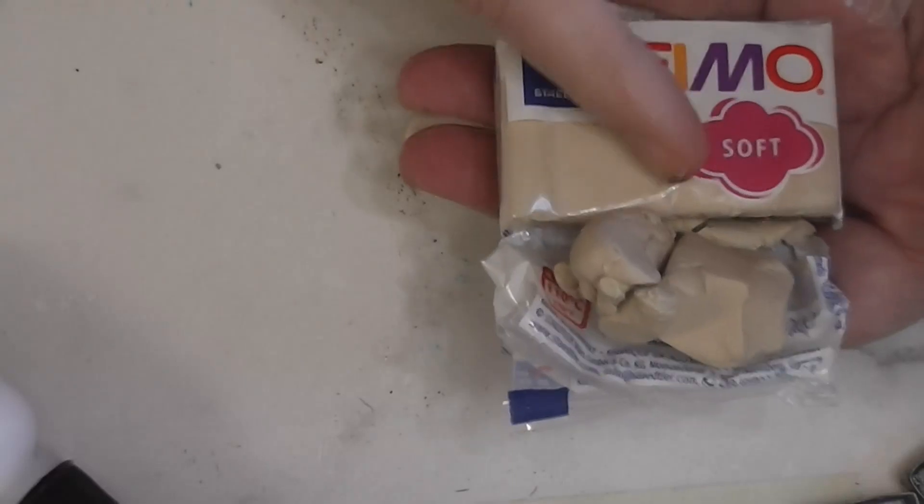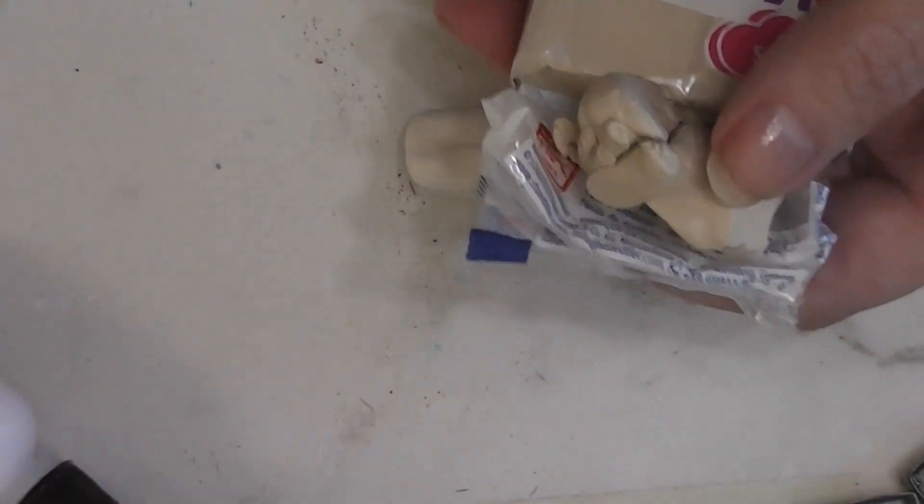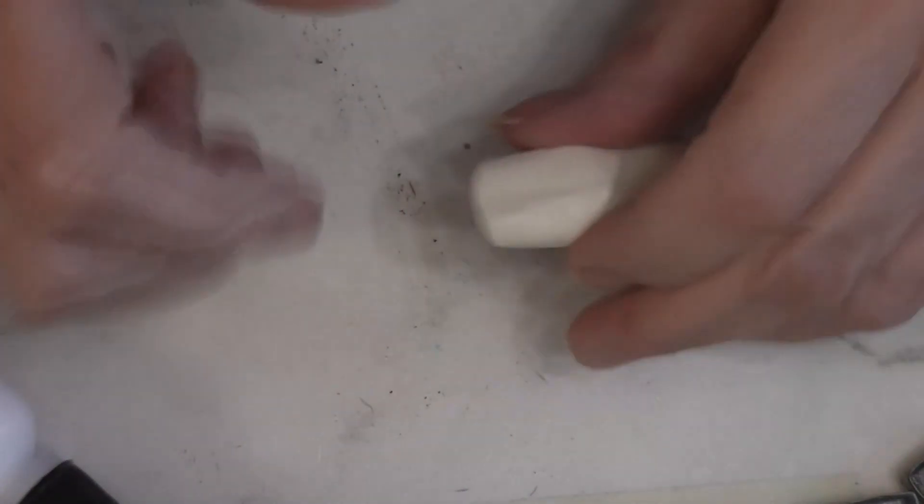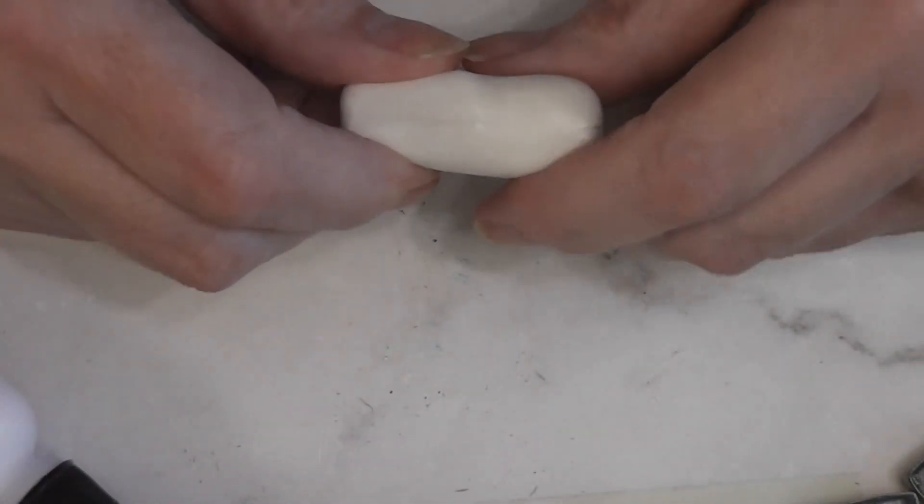Any white and any clay similar to this kind of a tan beige color will work. Just mix them together and kind of tweak the proportions until you get a color that looks not quite white but not quite beige.